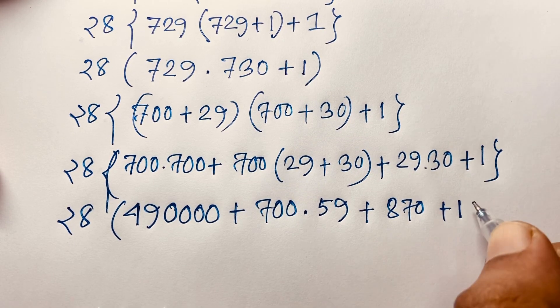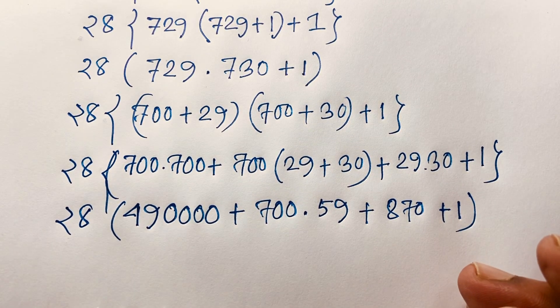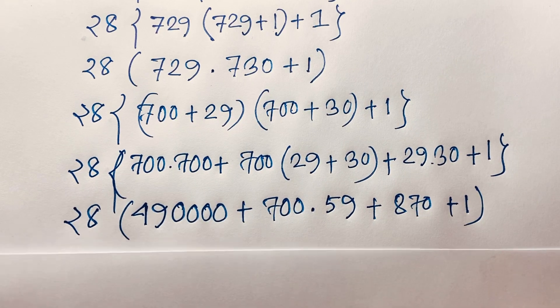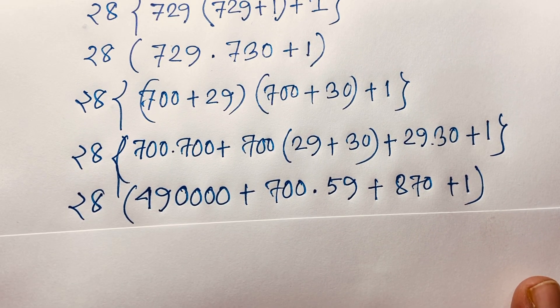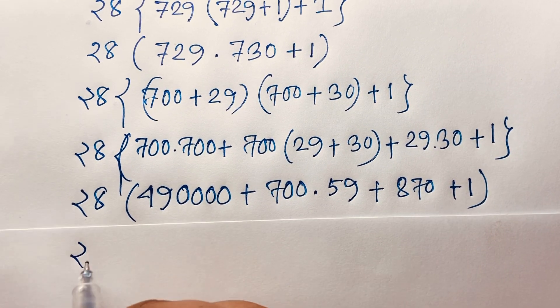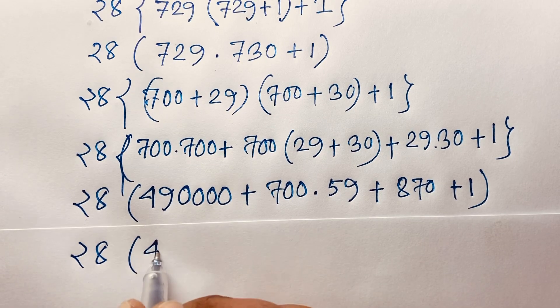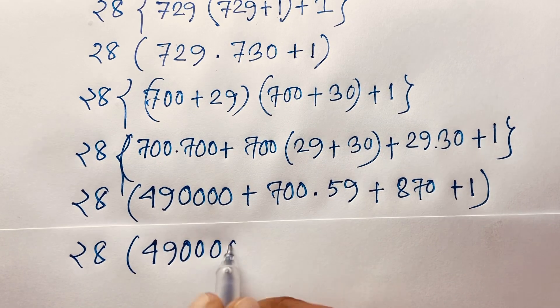Now adding: 490000 plus 41300 plus 870 plus 1 gives 532171. So the expression becomes 28 times 532171.